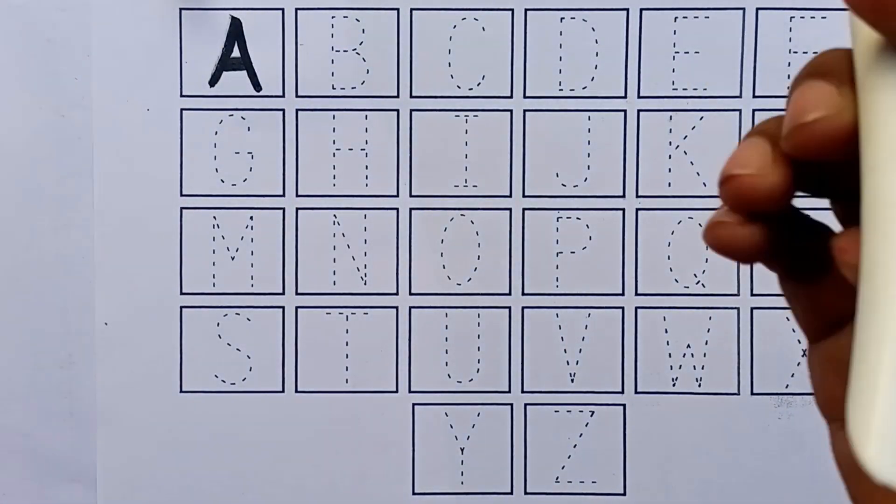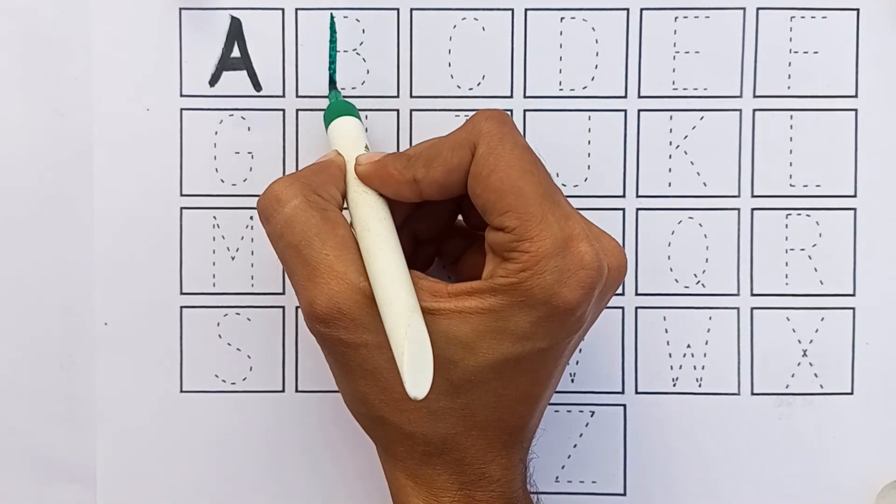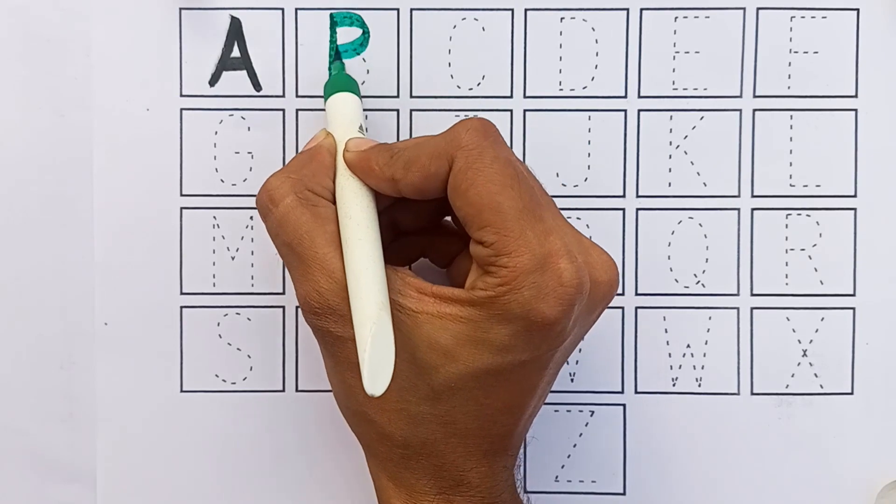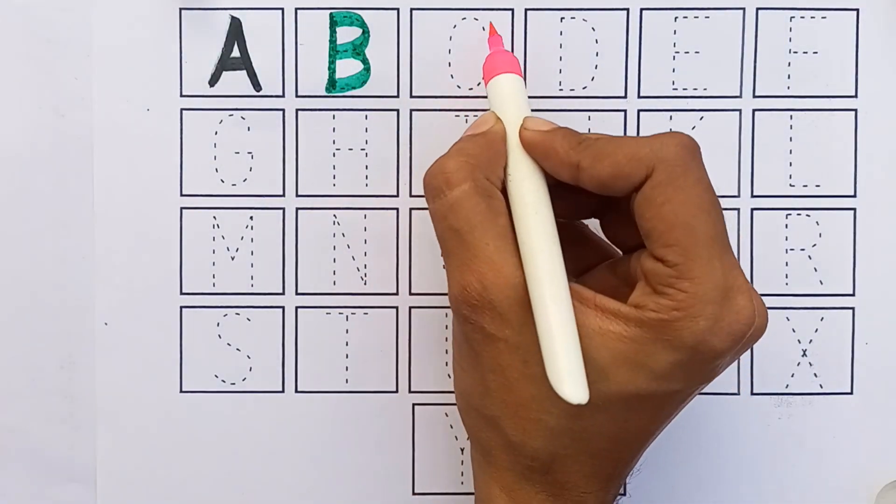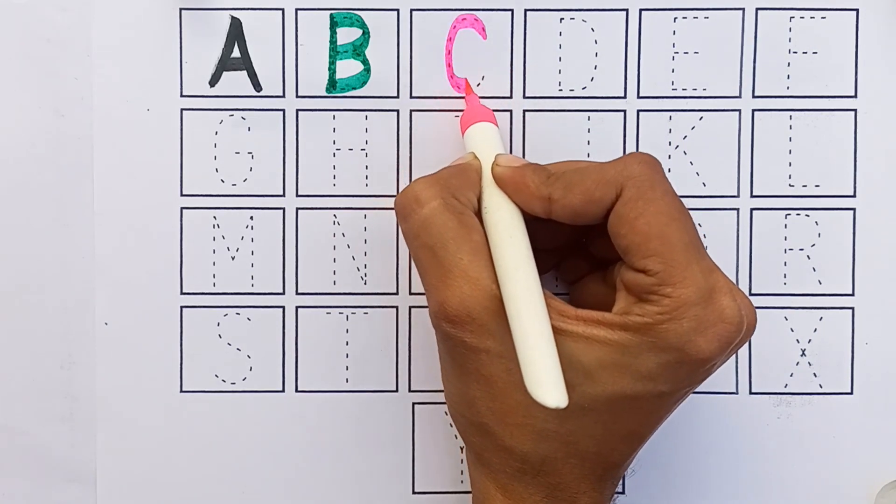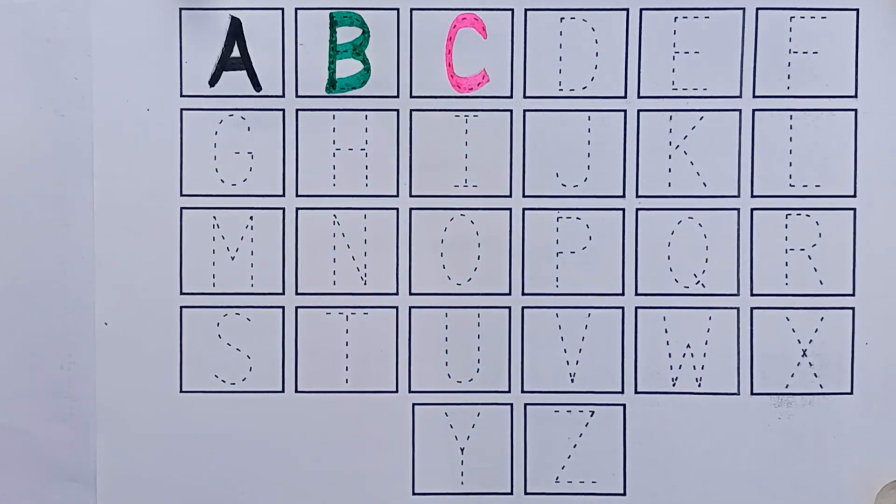A. A for Apple. B. B for Bat. C. C for Cat.